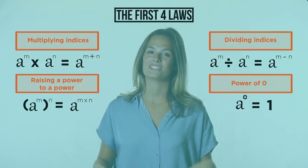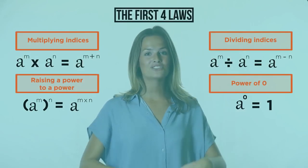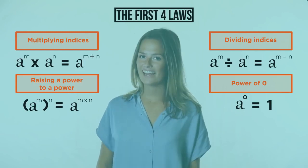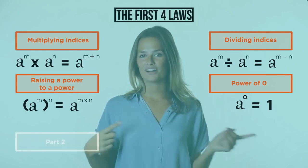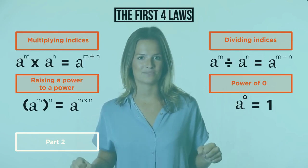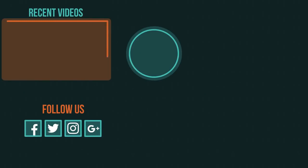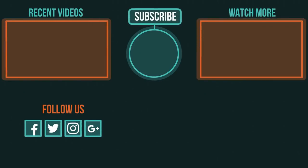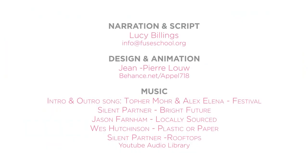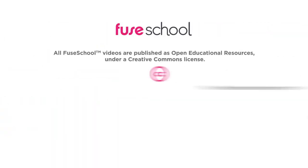So here are the four laws that we've seen so far. Make sure you understand why they work, and then you don't need to stress about learning them. Watch part two to discover how fractional and negative indices work. If you liked the video, give it a thumbs up and don't forget to subscribe. Comment below if you have any questions. Why not check out our Fuse School app as well. Until next time.